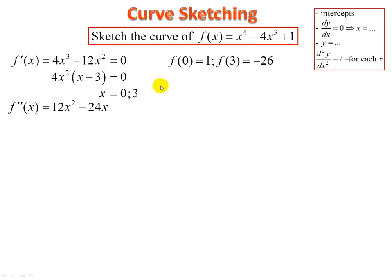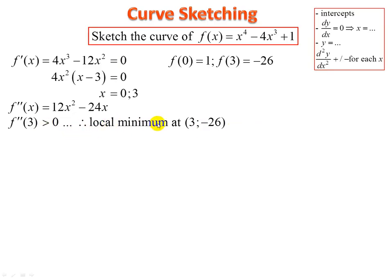Substitute x equals three into the second derivative — we get a positive, so it's a local minimum at (3, −26). When we substitute x equals zero into the second derivative, we get zero — and that's a problem, because it is inconclusive.